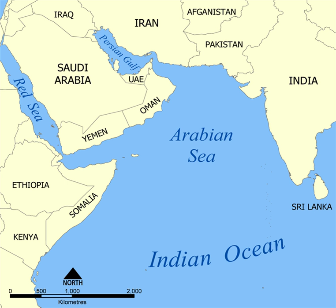This is a list of seas, large divisions of the World Ocean, including areas of water variously: gulfs, bights, bays, and straits.